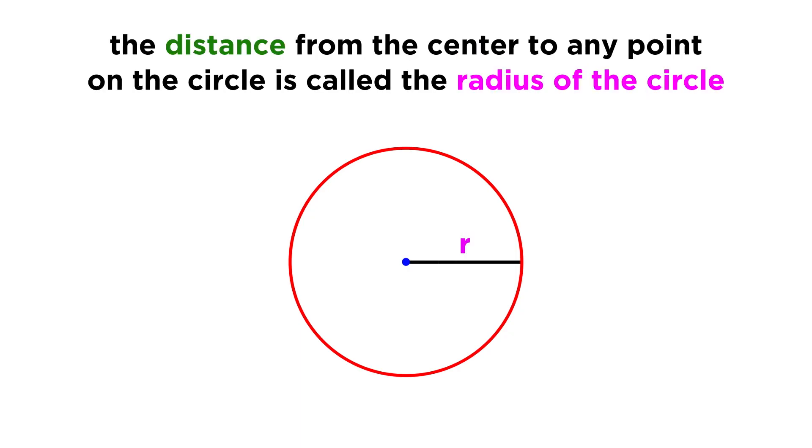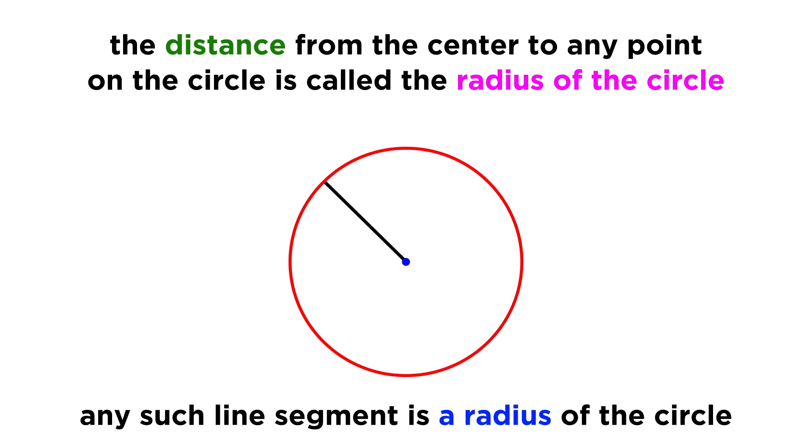The distance from the center to any point on the circle is called the radius of the circle, and any line segment connecting the center and some point on the circle can be referred to as a radius.